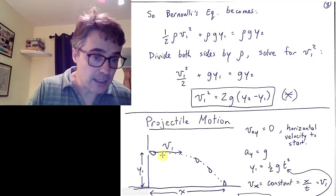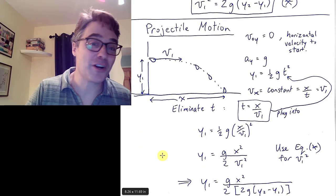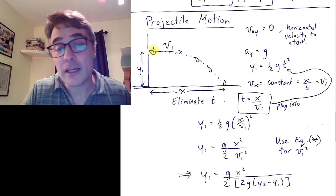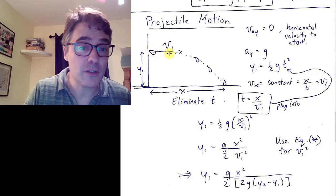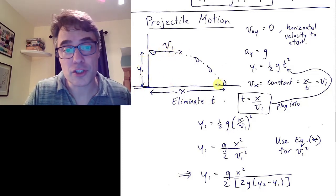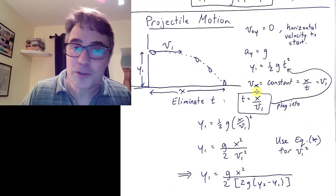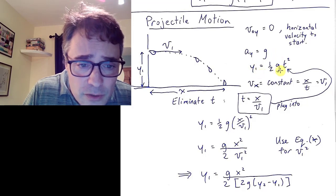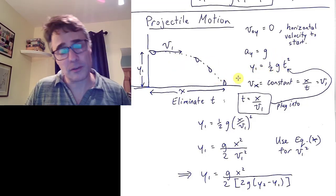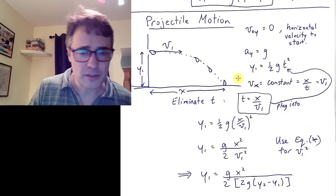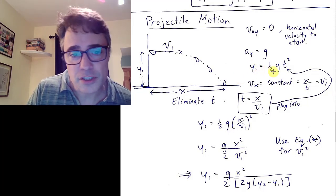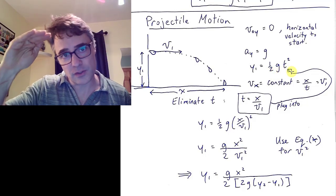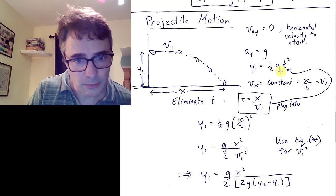Next, it's a projectile motion problem. Something that you should be very familiar with from Physics 151. You have a stream of water initially going horizontally with speed V1, and it's at a height Y1. So what's the range? There's lots of ways to solve these. What I did is I used time. The time for the vertical motion is equal to the time for the horizontal motion.